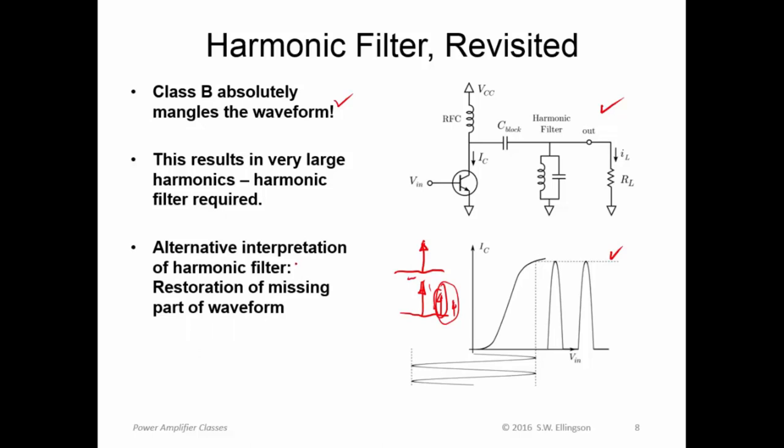So one way to think about how to deal with this is to filter the output in such a way that we can exclude the harmonic, at least the next one and maybe even higher order harmonics. So one way to interpret the harmonic filter is not just as a way to deal with the distortion due to the quasi-linear operation that we're implementing here, but also as restoration of the missing part of the waveform. Because if we take these higher harmonics and remove them, we're back to this. So in other words, the harmonic filter is restoring the missing part of the waveform.